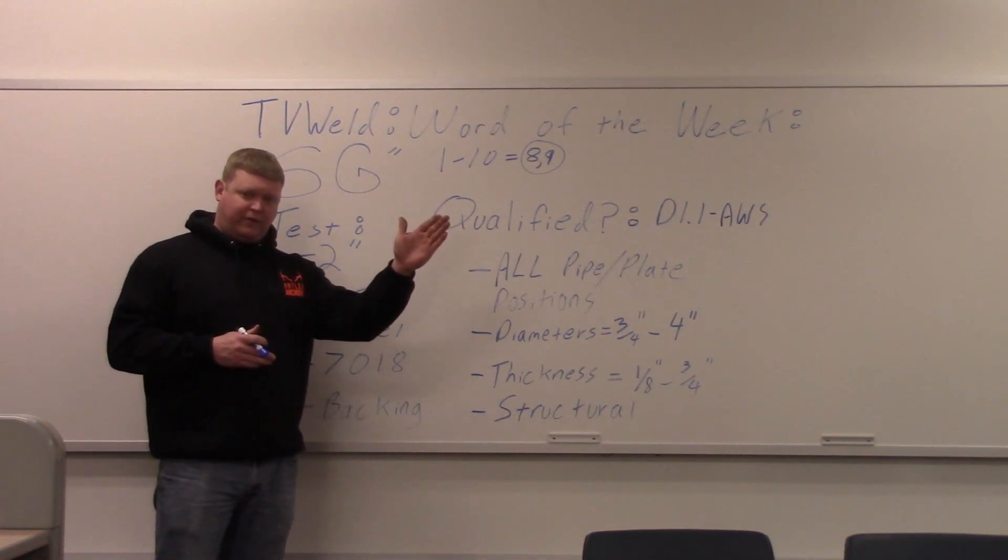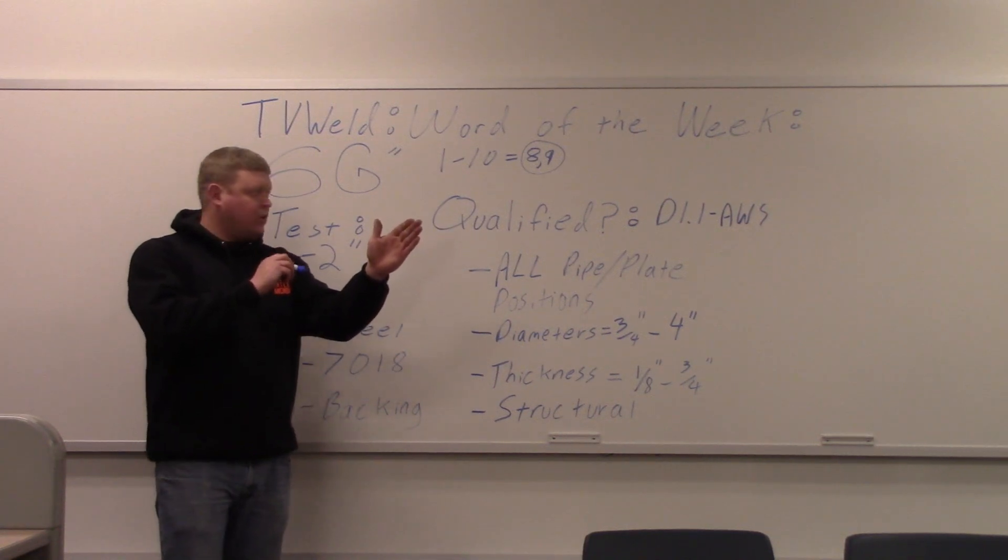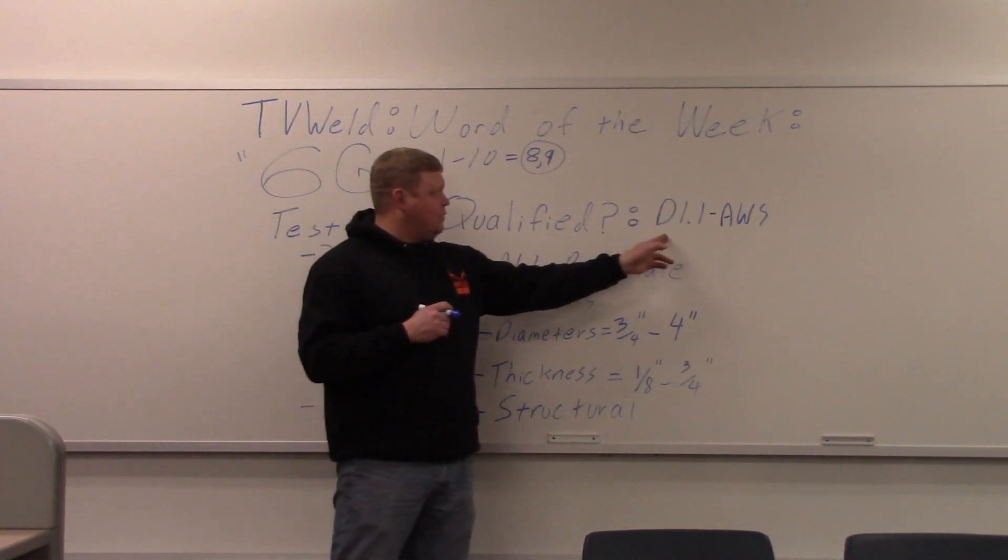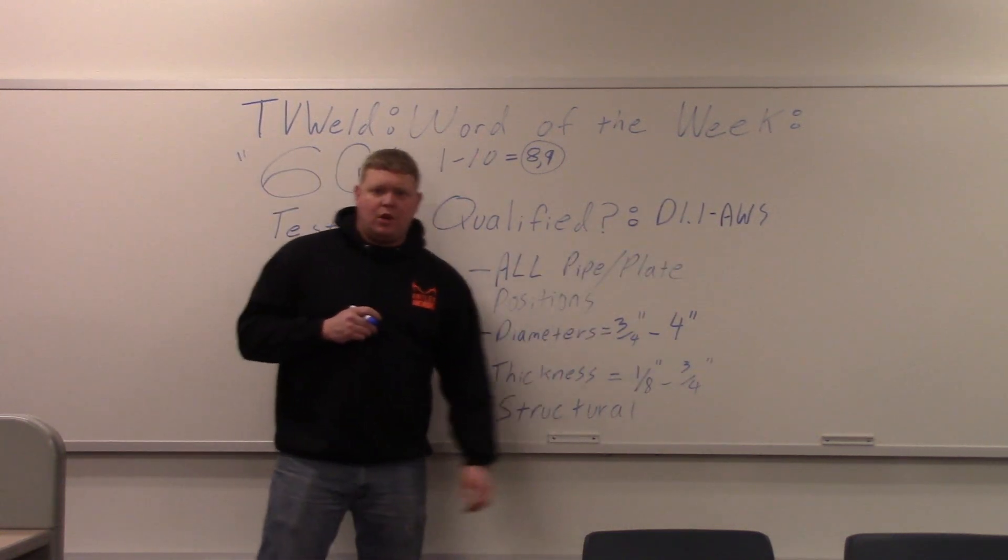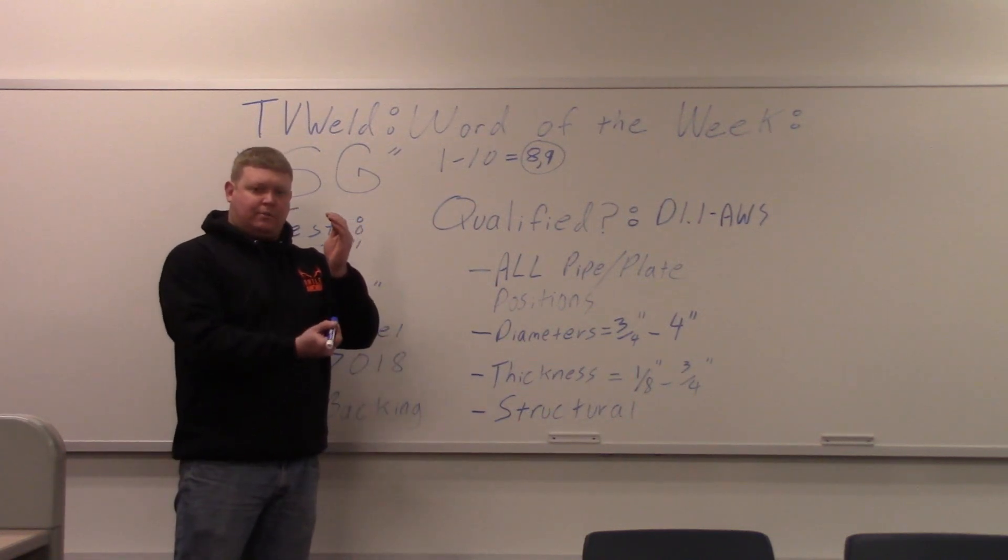It's when you have your pipe at a 45 degree angle and you weld it from the bottom up. In our case, we're going to do an imaginary kind of certification, but we're going to use the D1.1 AWS Structural Steel Weld. It usually dictates that you start at the bottom and go to the top.